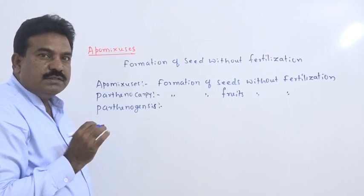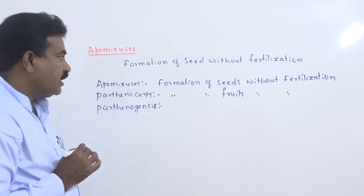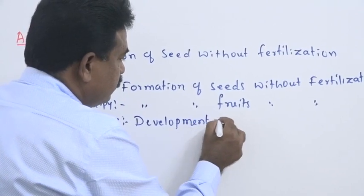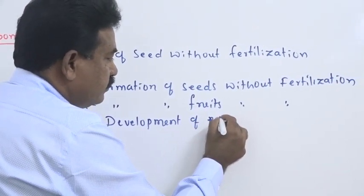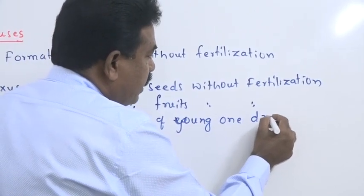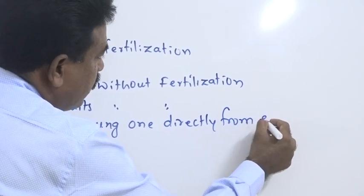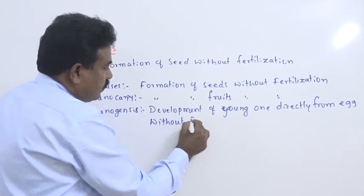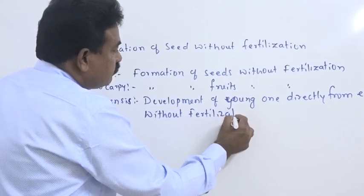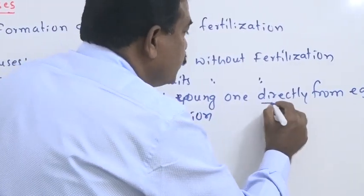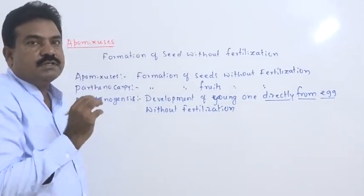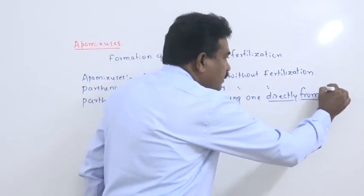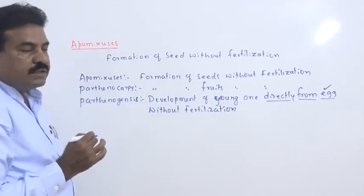Generally, parthenocarpic fruits are seedless, hence they have greater commercial importance. Parthenogenesis means development of young one directly from egg or female gamete without fertilization. Here, the term directly from egg is most important because during fertilization, two cells are involved. One is egg, another one is sperm. Therefore, we have to define very perfectly, either egg is involved in parthenogenesis or sperm.